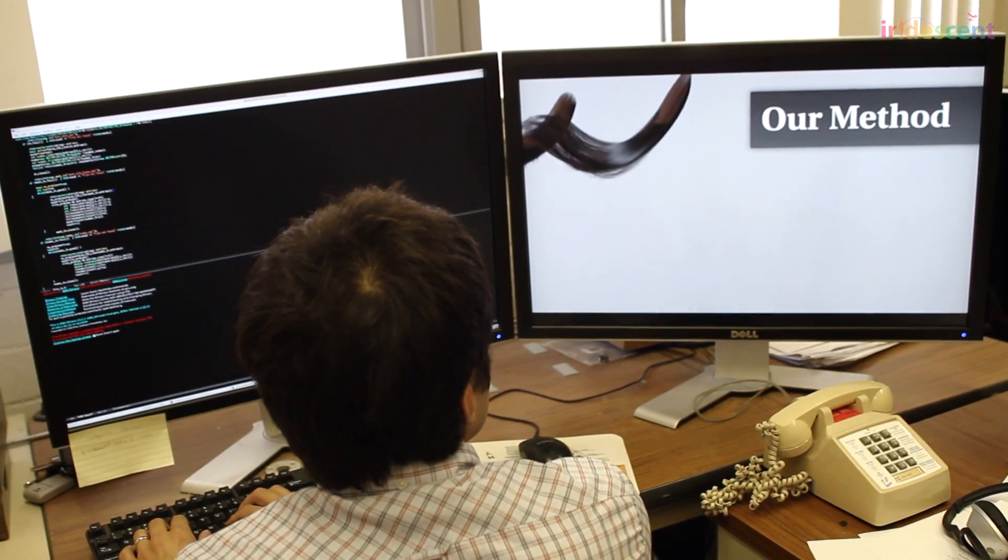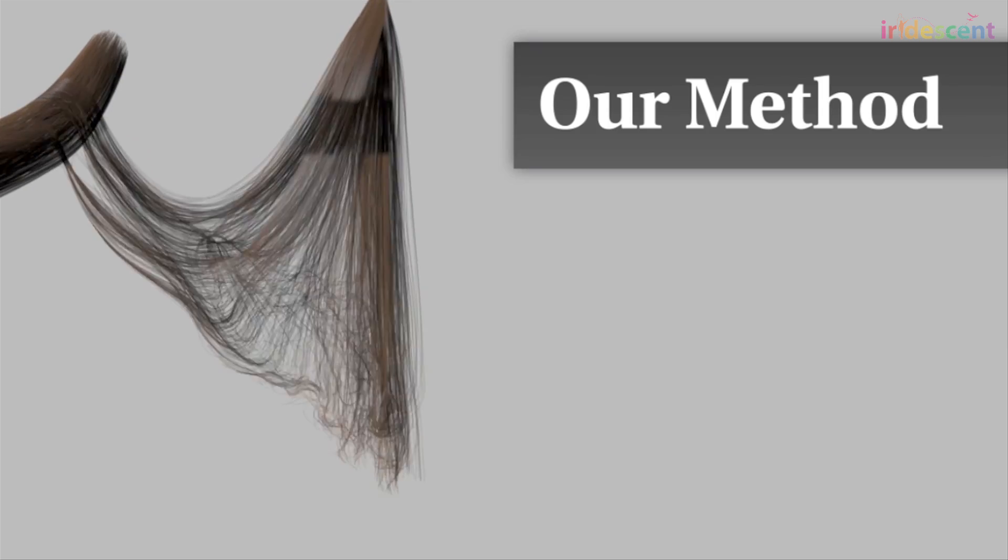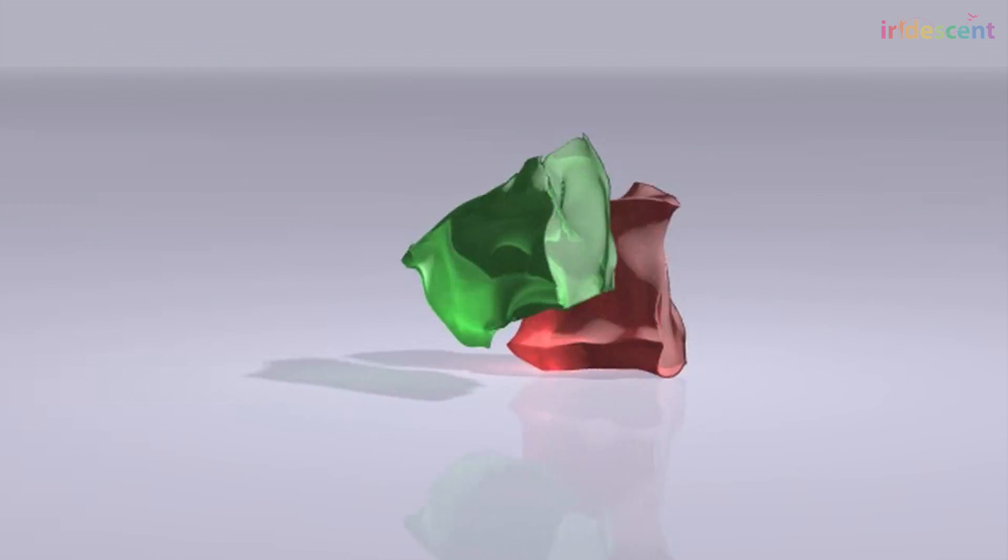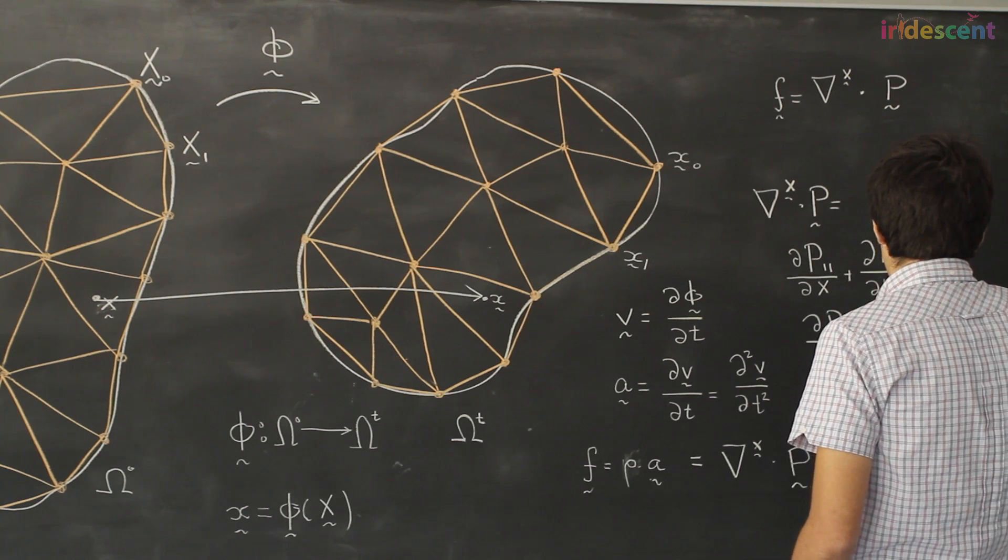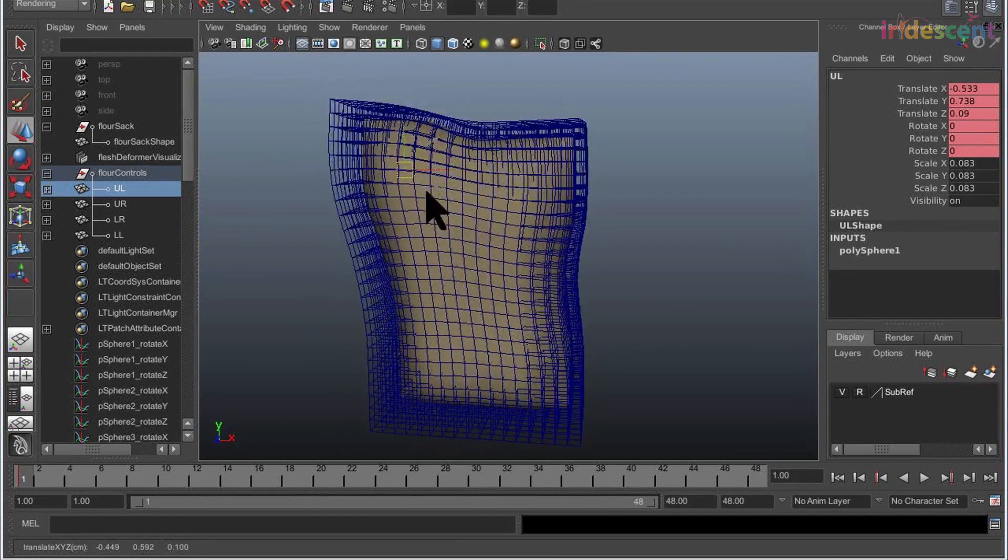Joseph uses math and physics to describe how things in our real and imperfect world work. He translates things in our world into mathematical equations that can be solved by a computer.